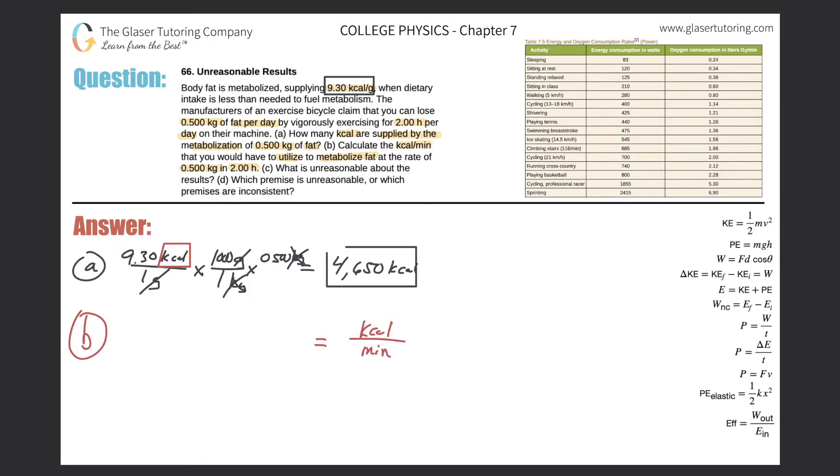We need to figure out what conversion factors we need so that when we multiply them all together we get these units. They say we are metabolizing 0.5 kilograms in two hours. My time unit in my answer is in the denominator, so I'm going to write this as a fraction: 0.5 kilograms of fat per two hours. This time unit is also in the denominator, so it's consistent with my required unit.